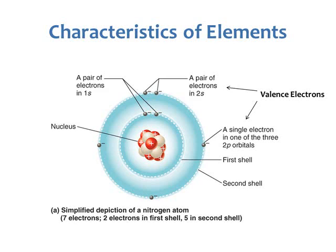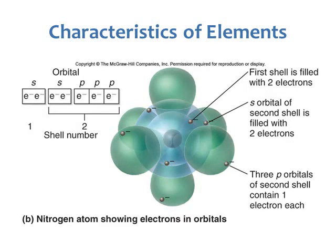This representation shows the different shells — shell one and shell two. You can also represent atoms using their orbitals, which give a more 3D shape. There are circular orbitals and P orbitals, which look like little dumbbell shapes, and these are where your electrons float around inside.